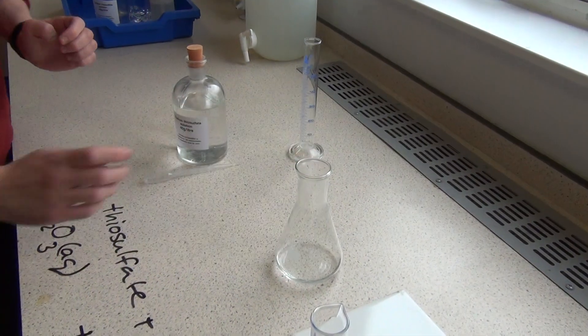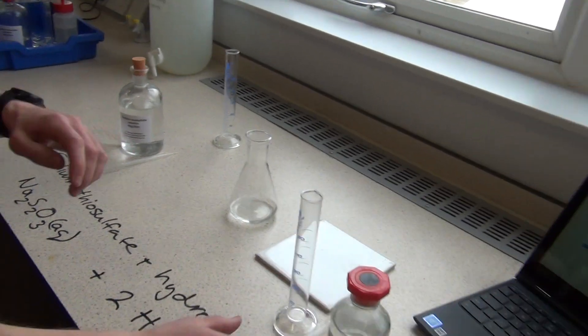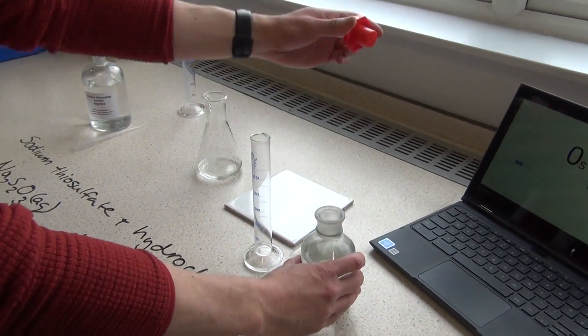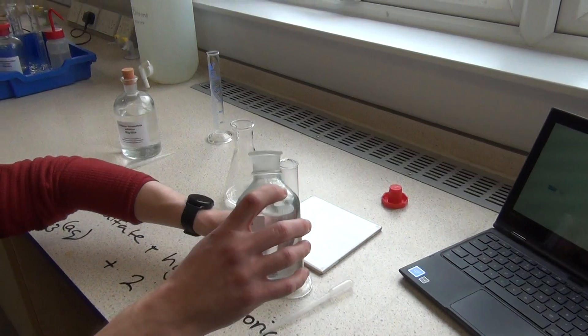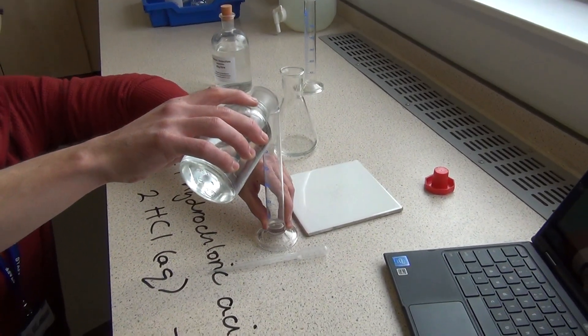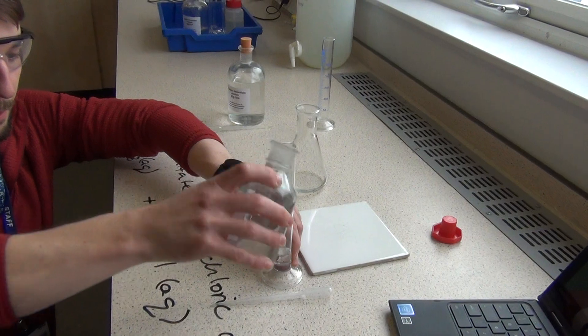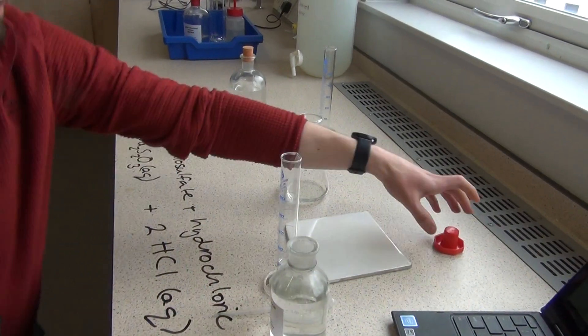Okay, now, next up, I need to react this with hydrochloric acid. I need less of this, I only need about 10 centimeters cubed. Don't worry too much about the quantities in exam questions, as long as you state a quantity and state that you're going to control it. Okay, bang on there, 10 centimeters cubed.